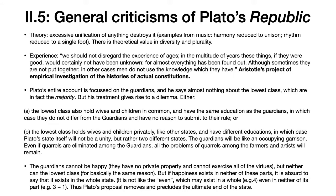Plato's entire account is focused on the guardians, and he says almost nothing about the lowest class—the producers—who are in fact the majority of his city. This gives rise to a dilemma: either the lowest class also holds wives and children in common and has the same education as the guardians, in which case they don't differ from the guardians and have no reason to submit to their rule; or the lowest class holds wives and children privately and has different education, in which case Plato's state won't be a unity at all but rather two different states—the state of the guardians and the state of the producing class—with the ruling guardian class acting like an occupying garrison over the other.